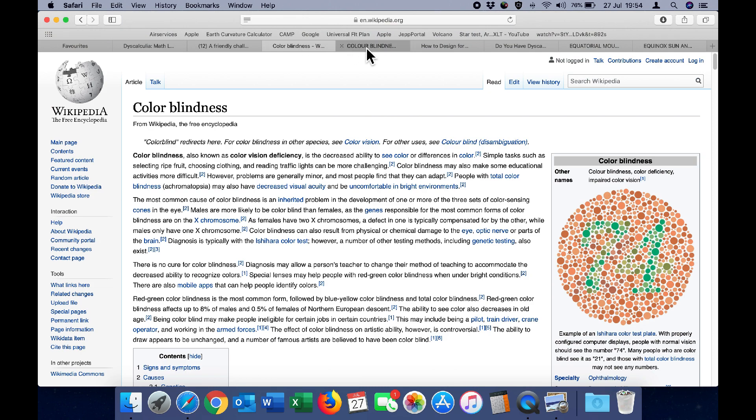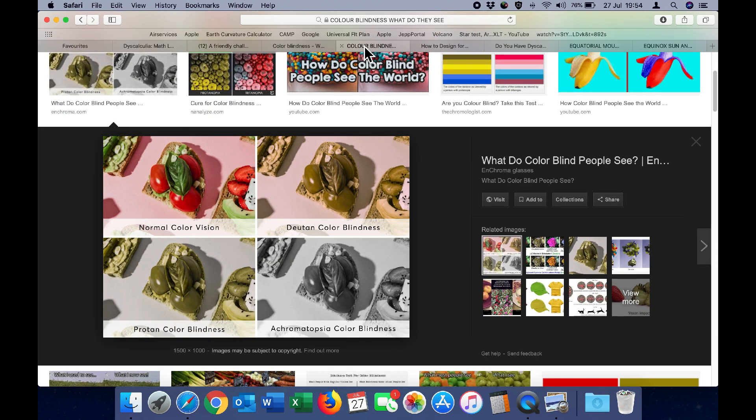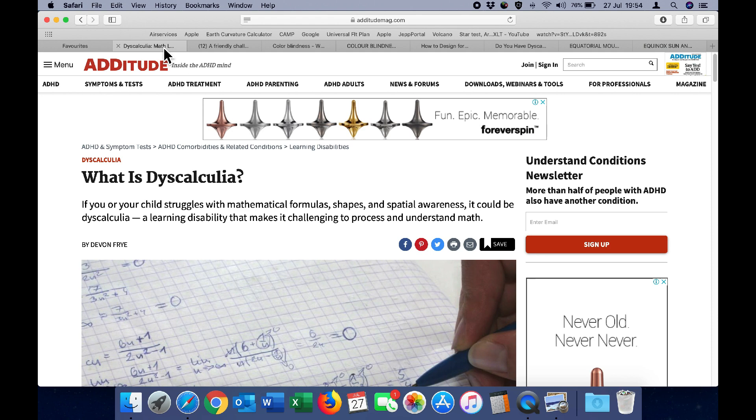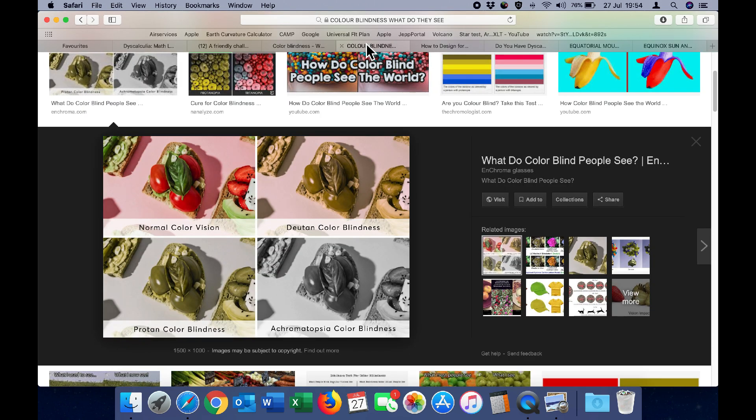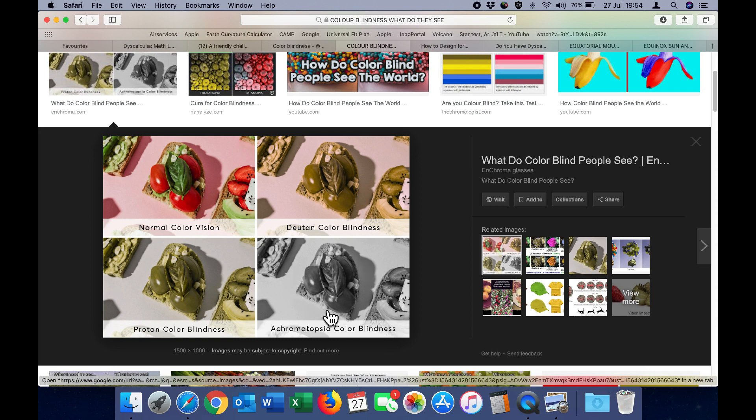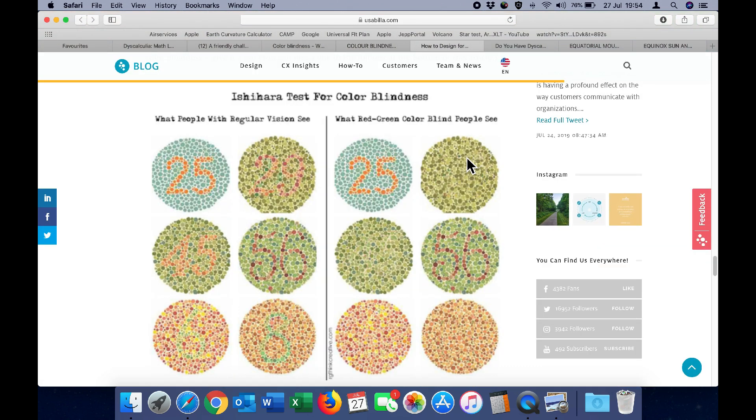But remember, to a geometry blind person who suffers from dyscalculia without realising it, they simply cannot see it. Just like the colour blind person cannot see the difference between reds and greens, and they cannot see the number 29 on that chart.